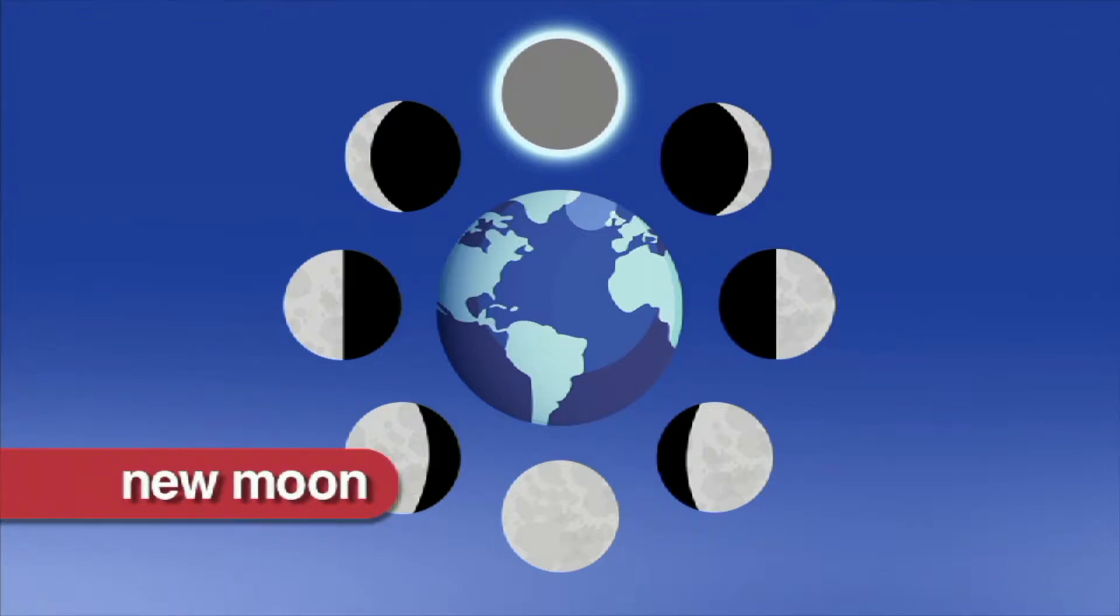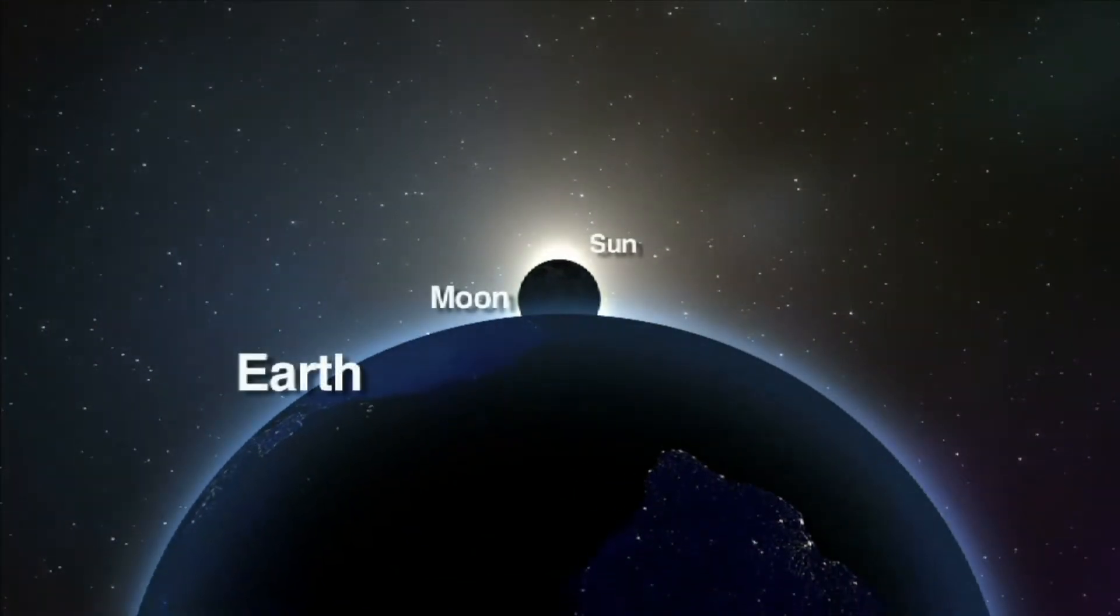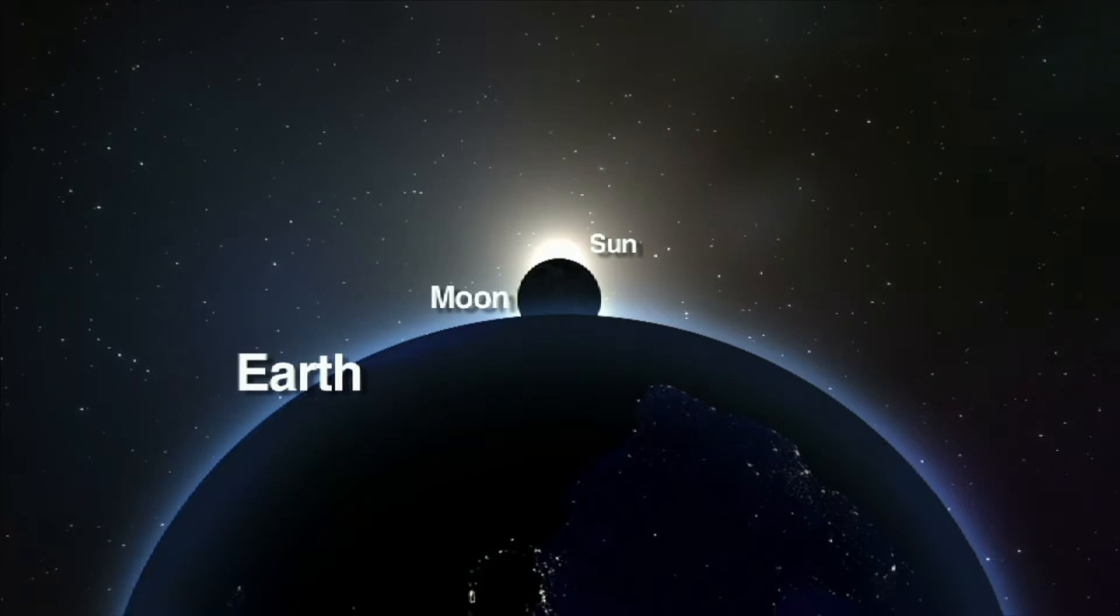The new moon is when we can't see any portion of the sun's light reflected on the moon. The moon is dark to us. This occurs when the moon is between the sun and the Earth in its orbit.